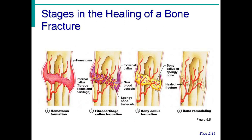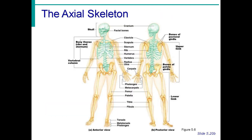After a bone fracture, healing begins with hematoma formation — a blood-filled swelling at the fracture site. The break is then splinted by fibrocartilage to form a callus. The fibrocartilage callus is then replaced by a bony structure. Finally, the bony callus is remodeled to form a permanent patch.